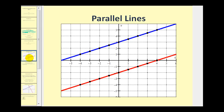Here's an illustration of two parallel lines. Using these two points, we can determine that the slope of this line would be up one, right two, so one-half. And using these two points on the red line, we could also determine the slope is equal to one-half. We can also tell that the y-intercepts are different, so we have parallel lines.